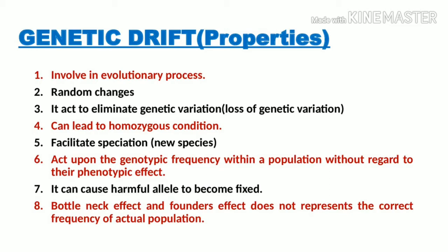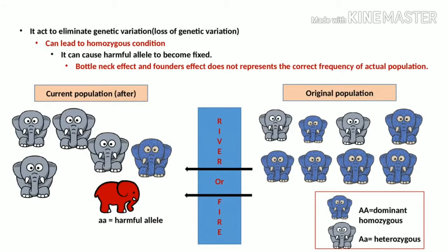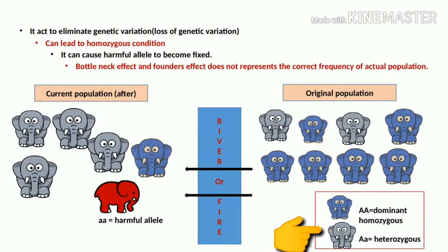Let's use a diagram to understand properties four, five, and six. The blue block in the middle represents a river in the case of founder's effect or fire in the case of bottleneck effect. In the original population, there is an abundance of blue elephants representing the dominant allele in a homozygous condition, and a very low number of grey elephants representing the heterozygous condition, where one allele is dominant (A) and the other is recessive (a).